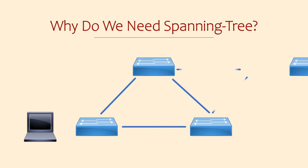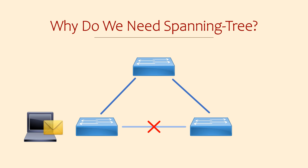So this is where spanning tree comes in. Its purpose is to find places where there could be a loop and prevent it from forming in the first place. It does this by selecting one of the links in the loop and blocking it, which prevents frames from travelling around the network indefinitely.